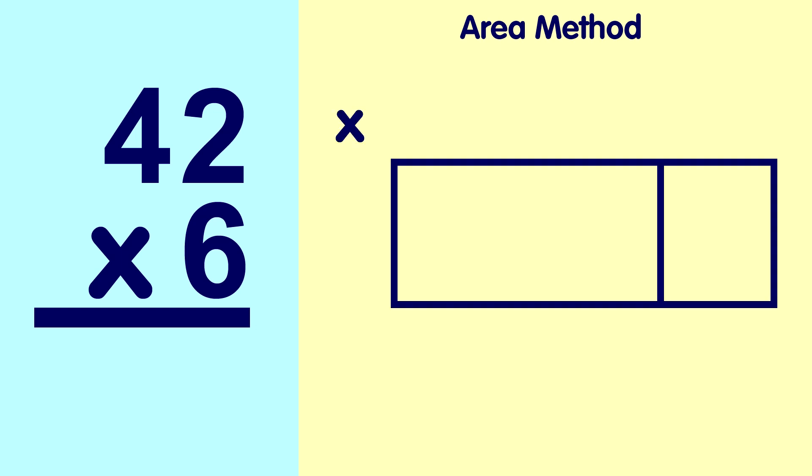We're multiplying by 6, so we'll put a 6 here on the side. Now, we need to write the number 42 across the top of our rectangle in expanded notation: 40 plus 2.